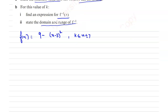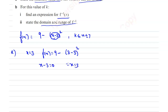First, we need to find the smallest value of k. If we take x = 3, then f(x) = 9 - (3 - 3)² = 9. We equate (x - 3) to 0, which implies x = 3. Hence the smallest value of k is 3, and the domain of f is 3 ≤ x ≤ 7.